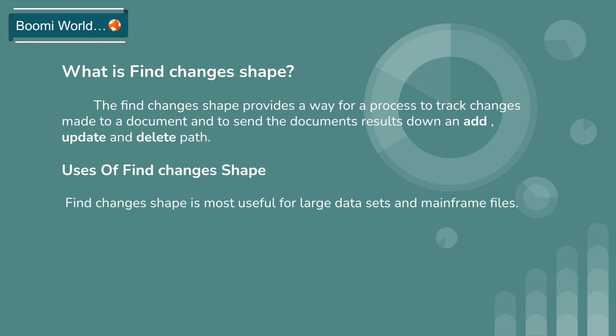If there are any changes on that particular document, it will route the documents to the appropriate paths. If there is any new data or new document added, those results will go to the add path. If any document got updated, it will go to the update path. If any document got deleted from the source system, it will go to the delete path.